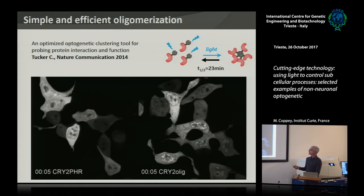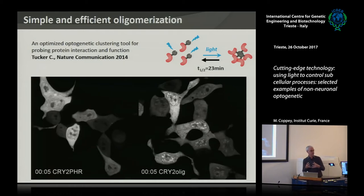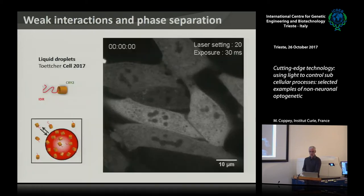One problem with this oligomerization is that the aggregates are solid, prion-like structures — big aggregates that take time to dissociate, sometimes persisting 30–40 minutes or even an hour. There is, however, a beautiful system based on phase transition.